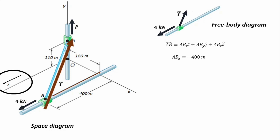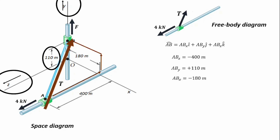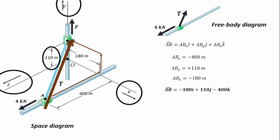Next, we see how this moves along the Y axis. Along the Y axis, the displacement value is 110 meters. So ABY is equal to plus 110 meters, because it is in the positive direction of the Y axis. Finally, the movement in the X axis takes us to point B, and the displacement in the X axis is equal to 180 meters. So ABX is minus 180 meters, because it's in the opposite direction of the X axis. Invariably, we've gotten our displacement vector to be minus 180i plus 110j minus 400k.